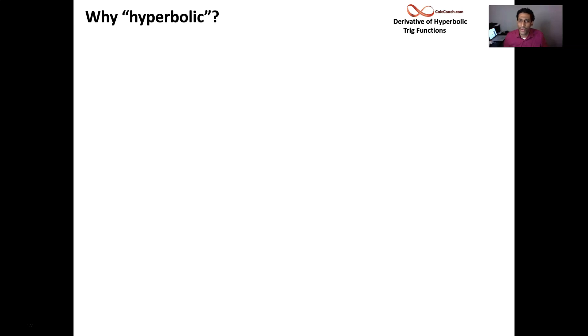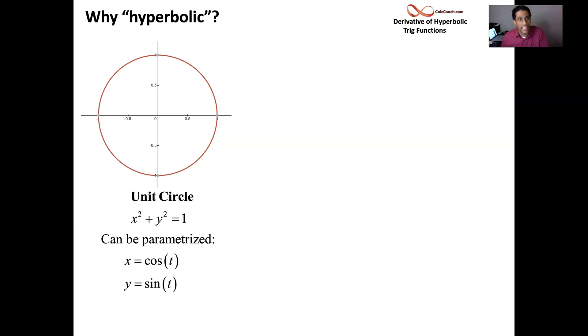So why are they called hyperbolic and trig? Like what is this? So let's just go back to regular trig. It's based off of having the unit circle and you can parameterize the unit circle by letting X be cosine T and Y be sine T. You travel along the unit circle and T would go from zero to two pi.